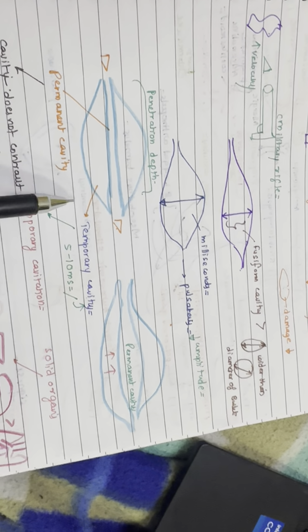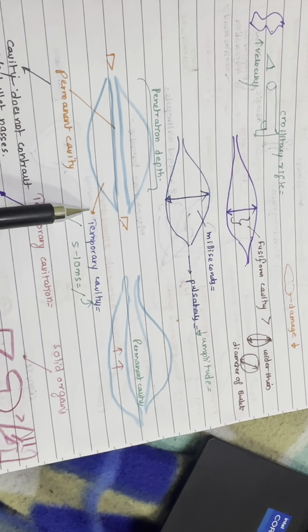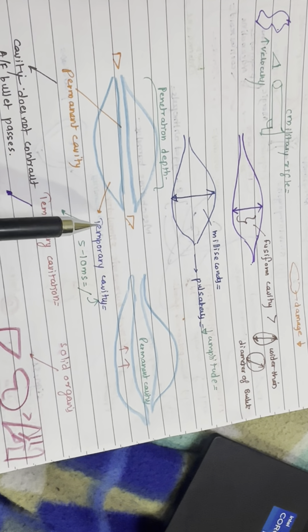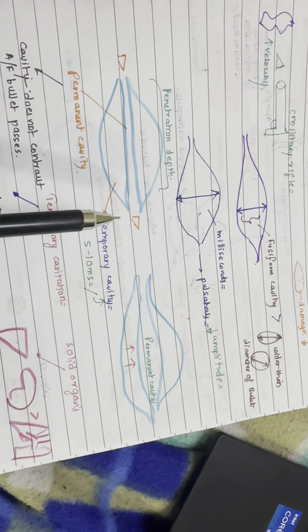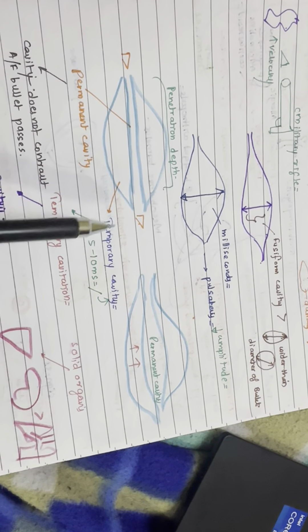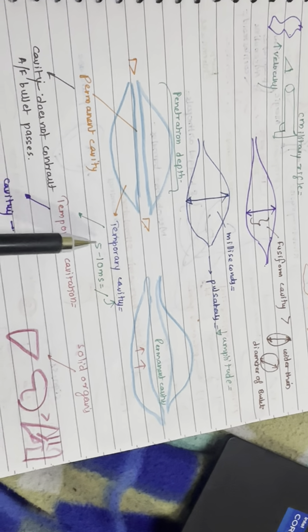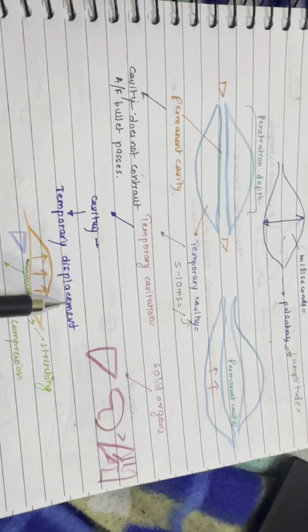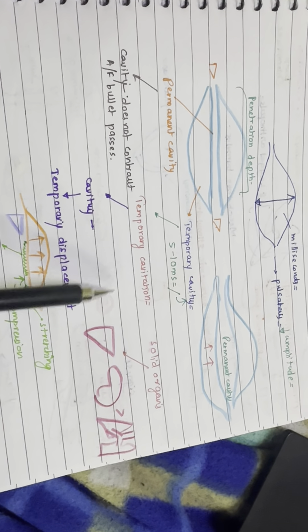This tubular zone of damaged tissue is also known as the permanent cavity, and the phenomenon is also known as permanent cavitation. The near-vacuum developed behind the bullet sucks in dirt and clothing fibers into the wound.